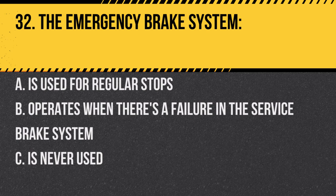Question 32. The emergency brake system: A. Is used for regular stops. B. Operates when there's a failure in the service brake system. C. Is never used. Answer B. Operates when there's a failure in the service brake system. It's a backup safety feature.